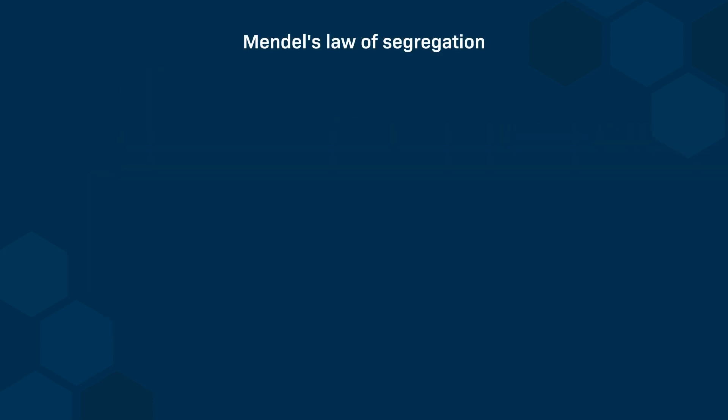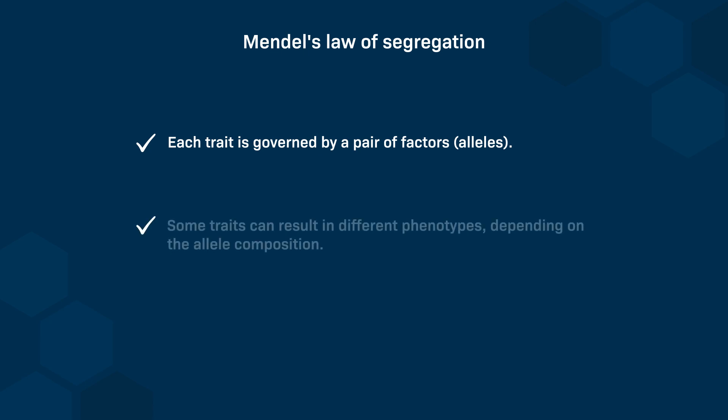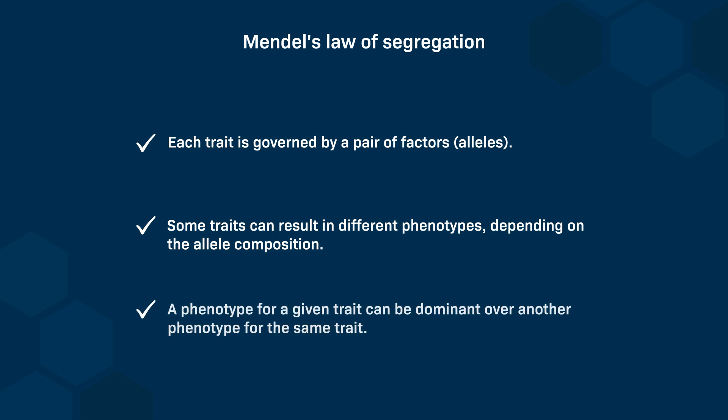This law relies on Mendel's realization that each trait he studied was governed by a pair of factors — we now know these factors as alleles. Some traits can result in different phenotypes depending on the composition of alleles, and a phenotype for a given trait can be dominant over another phenotype for the same trait.